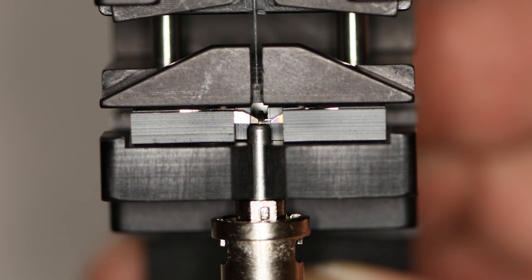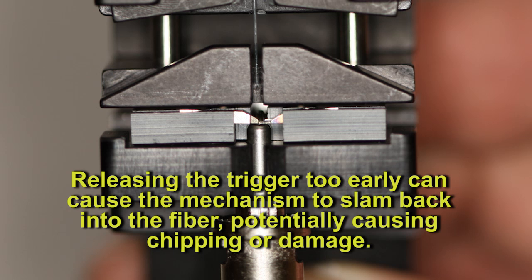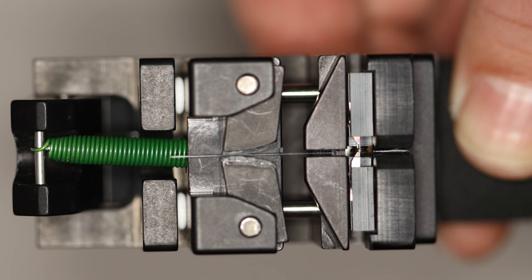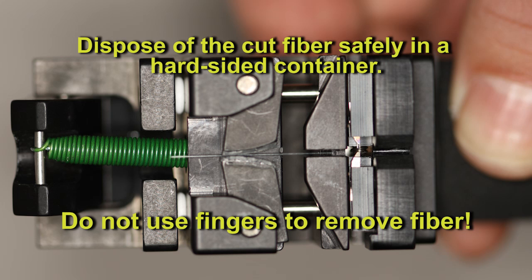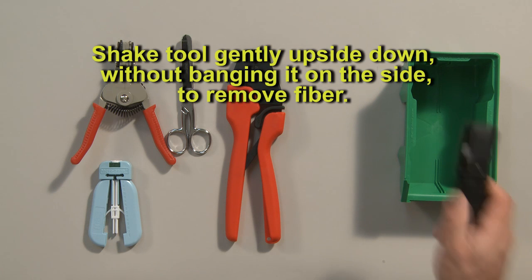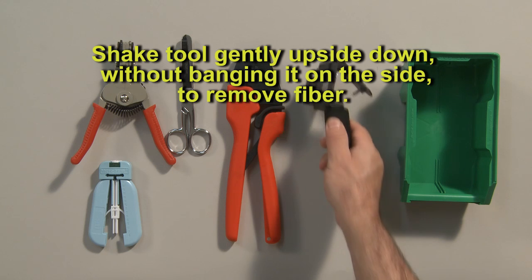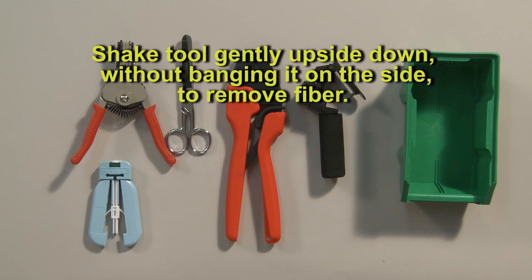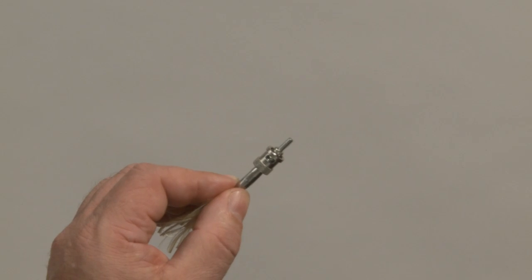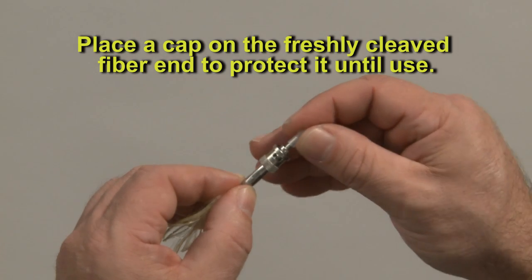Releasing the trigger too early can cause the mechanism to slam back into the fiber, potentially causing chipping or damage. Dispose of cut fiber safely in a hard sided container. Do not use your fingers to remove the bare fiber. Shake tool gently upside down without banging it on the side. Place a cap on the freshly cleaved fiber end to protect it until use.